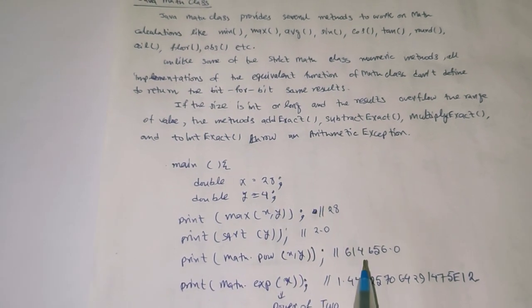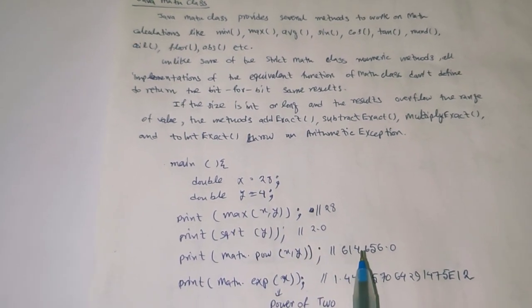Print Math.pow(x, y) means power of x to the power y, which is 28 to the power 4. The result is 614656.0 because of double type variable.